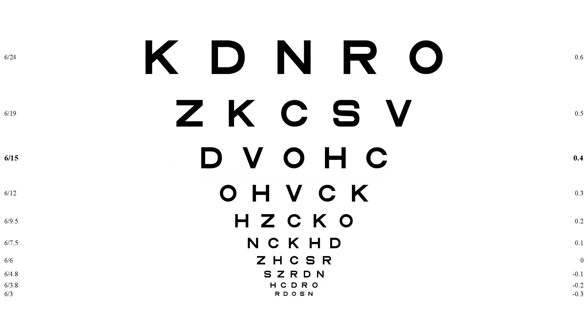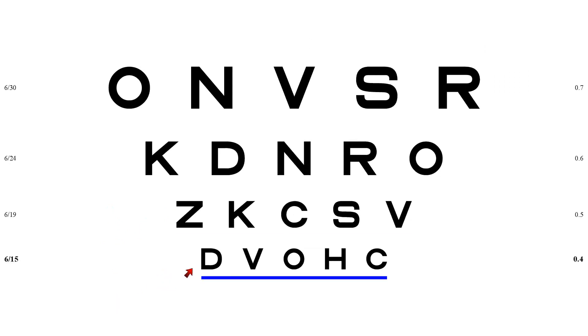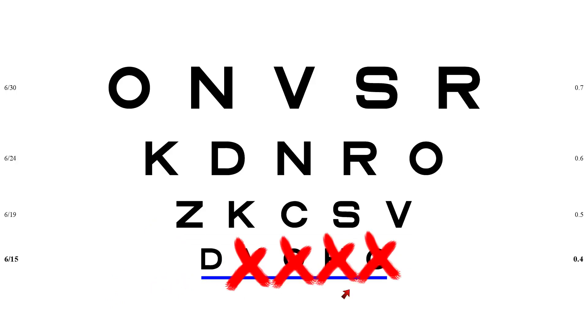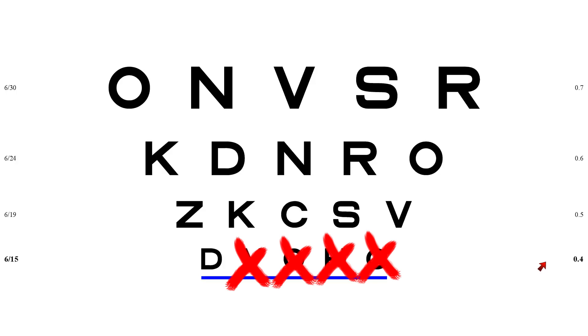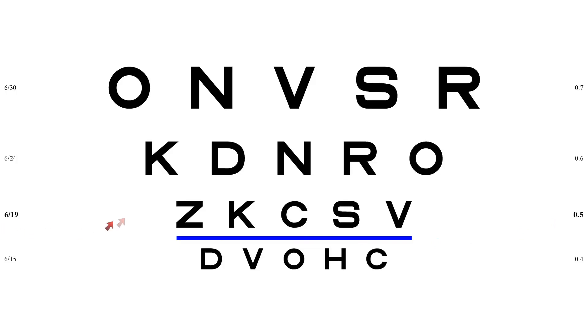Here's another one. Let's assume the best VA is 6/19 plus 1. It will make better sense if you think of this firstly in terms of which line did the patient get anything on — they got one on the 6/15 line. So start rather by thinking in terms of 6/15 minus 4, rather than 6/19 plus 1. So now it's easy: our base score is 0.4 and we add 0.02 for every letter missed, which in this case is 4. So the final score here would be 0.48, which is almost 0.5 and that effectively would have left you with the 6/19 line. It's easier to understand while looking at the VA screen and using the blue line to underline the line where the patient got any letters right — even just one — and then score that line and add 0.02 for every wrong letter.